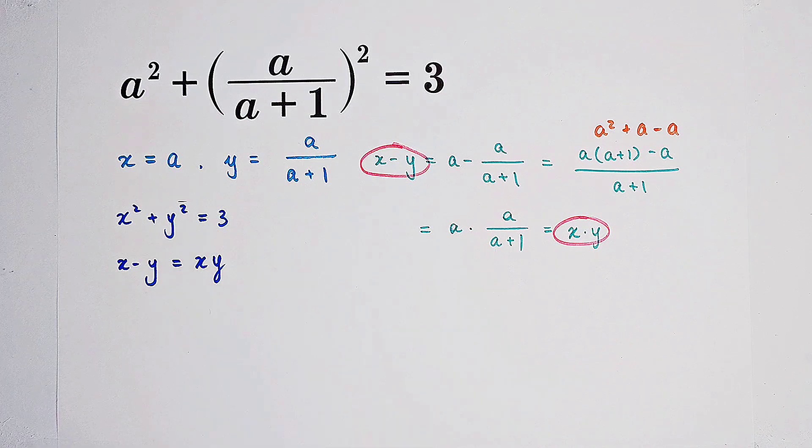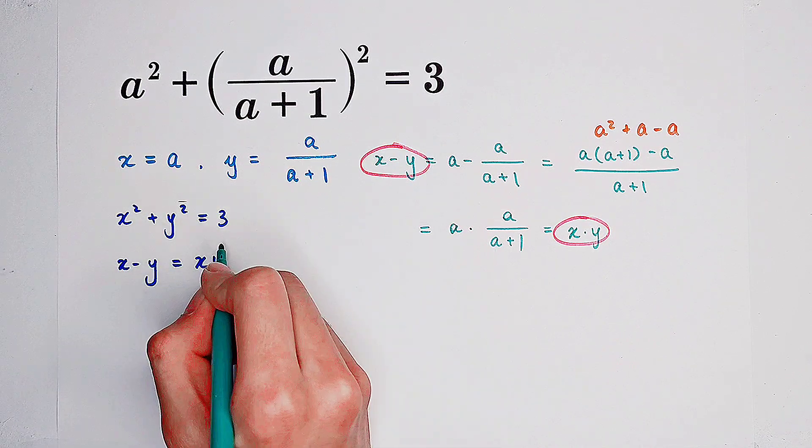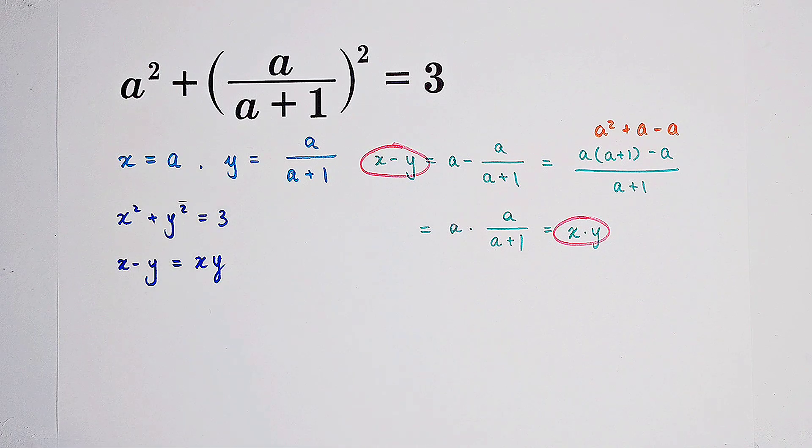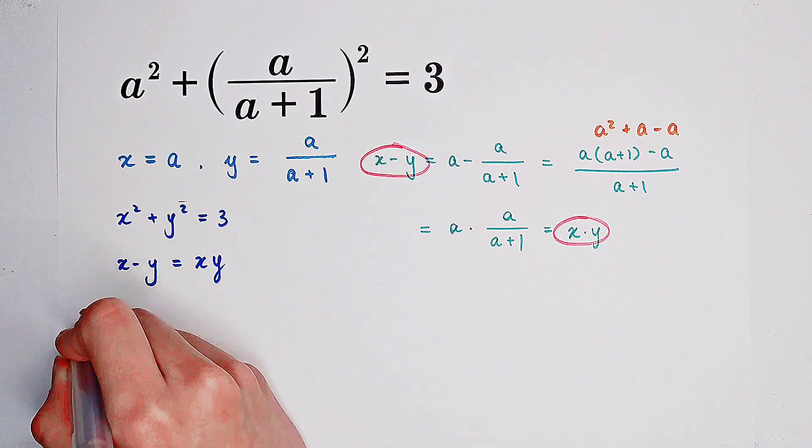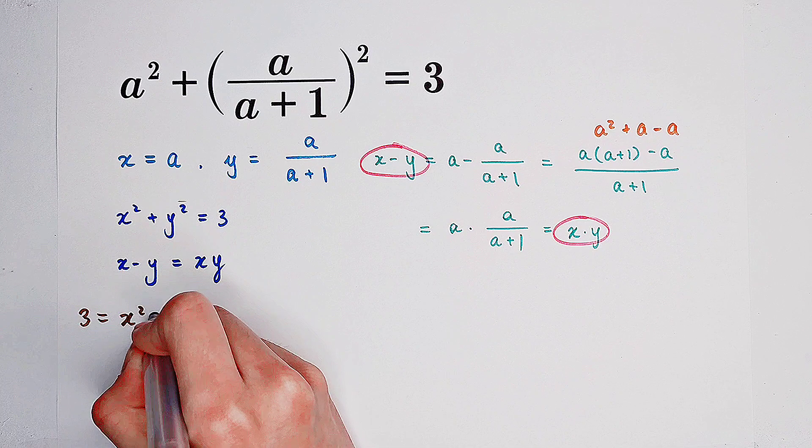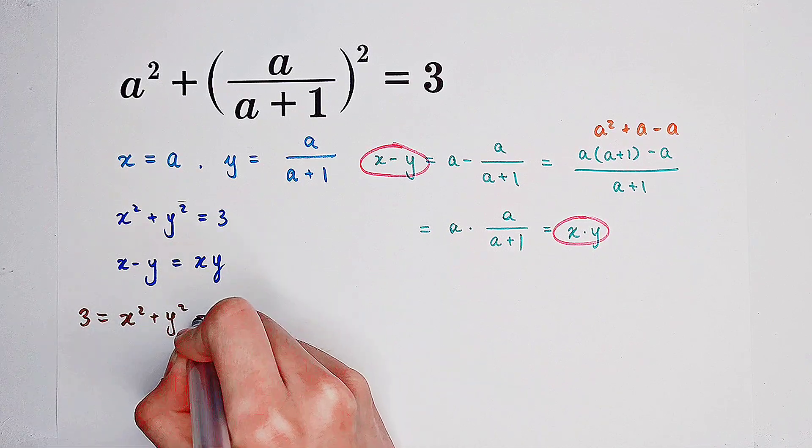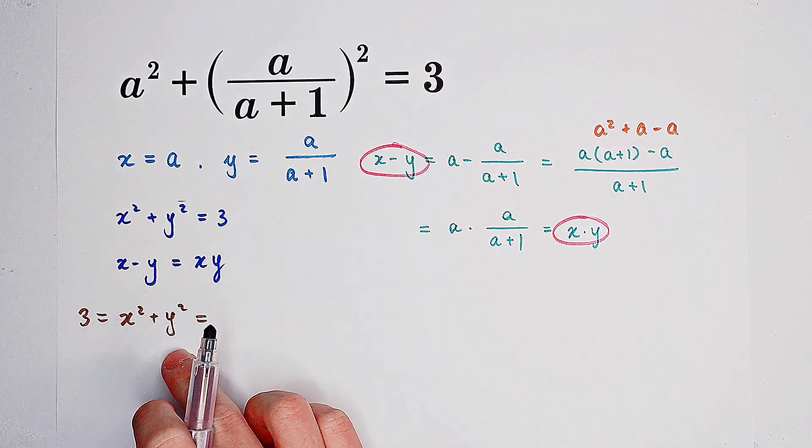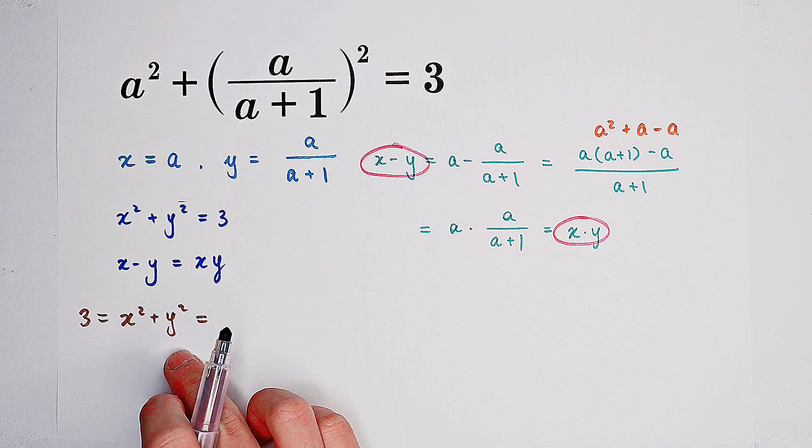So firstly, let's focus on our first term, on our first equation. We get 3 equals x squared plus y squared. And this term, this sum of squares can be written as